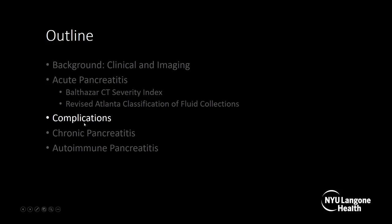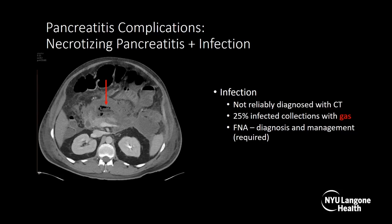Now we'll move on to complications of acute pancreatitis. On this axial CT with IV and neutral oral contrast, you can see a collection surrounding and involving the pancreas — it's heterogeneous with fluid, denser areas, and fat globules — consistent with necrotizing pancreatitis. Bubbles of air are also visible, indicating infected pancreatic necrosis. Infection is not reliably diagnosed with CT, with only 25% of infected collections having gas, so FNA is ultimately required for diagnosis and management.